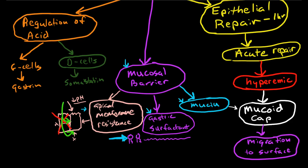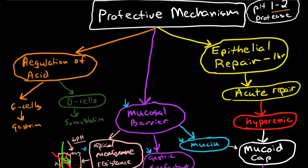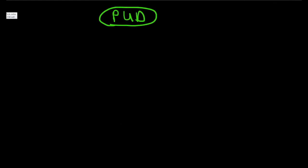Now I'm going to talk about how all of these things can be disrupted. It's disruption of one, two, or three of these mechanisms that can lead to peptic ulcer disease, and typically the causes of peptic ulcer disease impact all three: regulation of acid, disruption of the mucosal barrier, and disruption of the epithelial repair mechanism. In this country, the major cause of peptic ulcer disease is H. pylori.